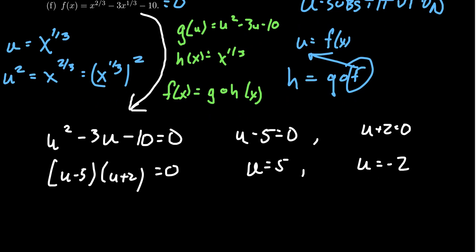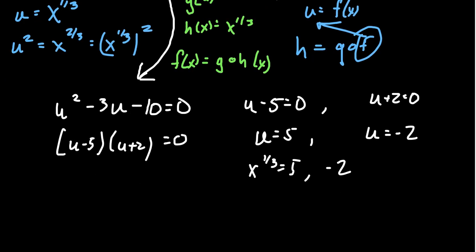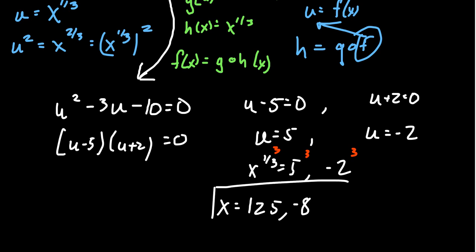But u is x^(1/3), so substituting back we get x^(1/3) = 5 or x^(1/3) = -2. To get rid of the one-third power, we cube both sides: x = 5³ = 125, or x = (-2)³ = -8. These are the two solutions to this quadratic-like equation. If we can recognize a u-substitution, we can solve many such equations.